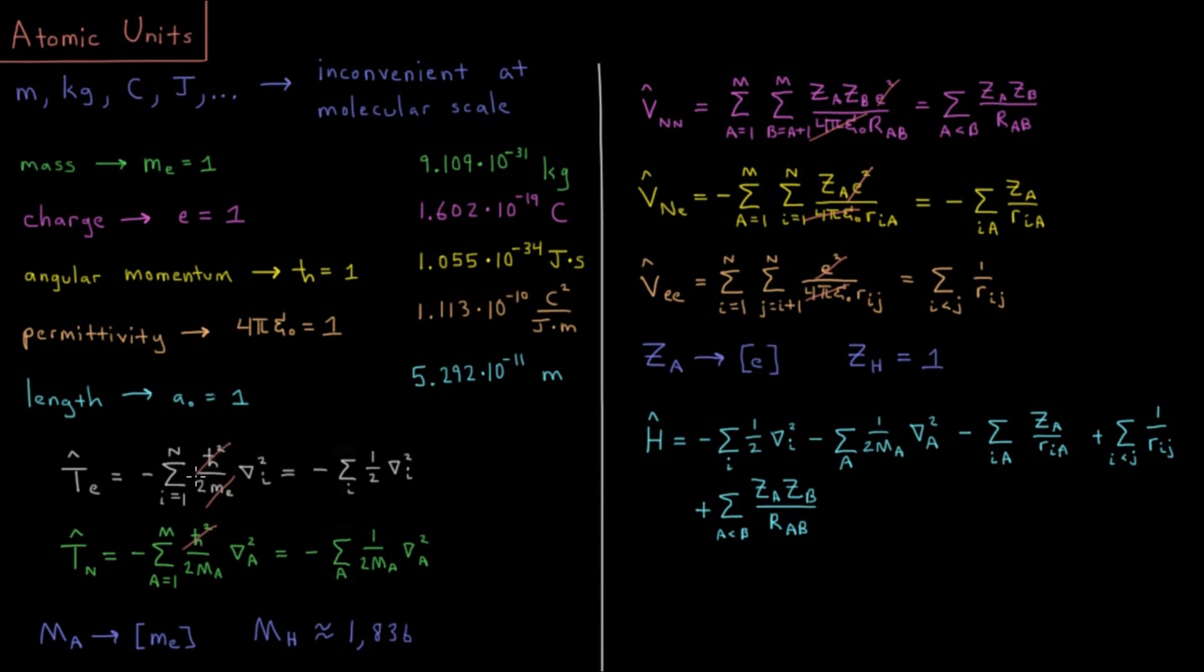So we go from negative sum i equals 1 to n number of electrons. h-bar squared is 1 squared, so that goes away. Mass of the electron goes away. Laplacian operator stays. And sometimes we don't want to fully write out that this sum goes from i equals 1 to n.